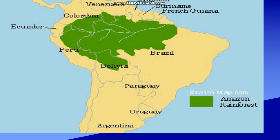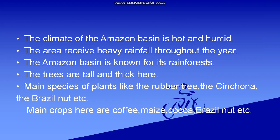In this map you can see in green color, this is Amazon rainforests. The climate of Amazon basin is hot and humid. The area receives heavy rainfall throughout the year due to its location in the equatorial region.